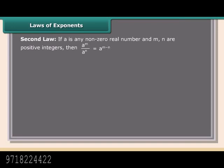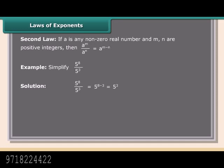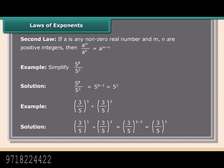Second law: If A is any non-zero real number and M, N are positive integers, then A raised to the power M upon A raised to the power N equals A raised to the power M minus N. Example: Simplify 5 raised to the power 8 upon 5 raised to the power 3. Solution: 5 raised to the power 8 minus 3, which equals 5 raised to the power 5. Example: 3 upon 5 raised to the power 5 divided by 3 upon 5 raised to the power 2 equals 3 upon 5 raised to the power 3.